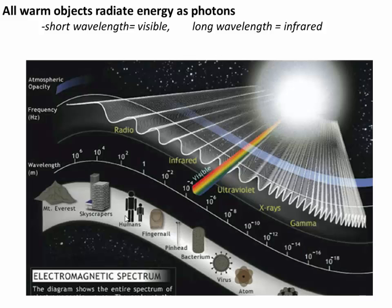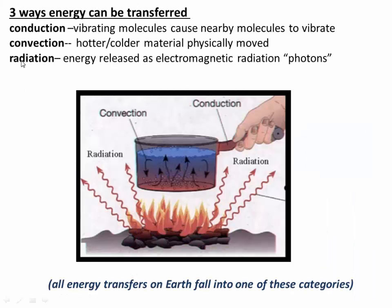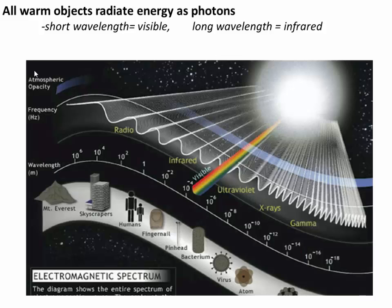Let's zoom in on radiation because it's really important in the earth system. All warm objects radiate energy by emitting photons. Photons can either be short wavelength — visible light is an example of short wavelength — or they can be longer wavelength, like infrared radiation. On the wavelength scale, infrared is a bit longer and visible light is a bit shorter wavelength.